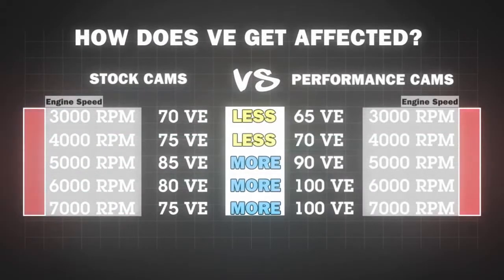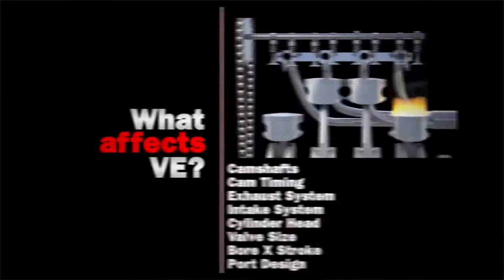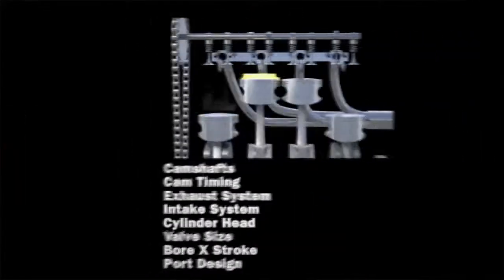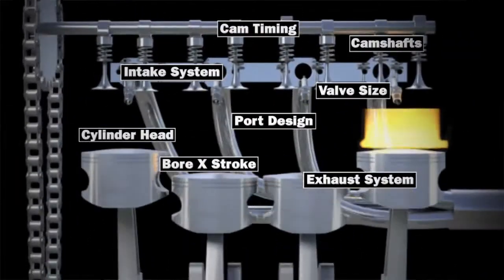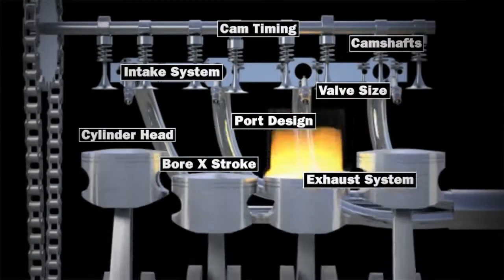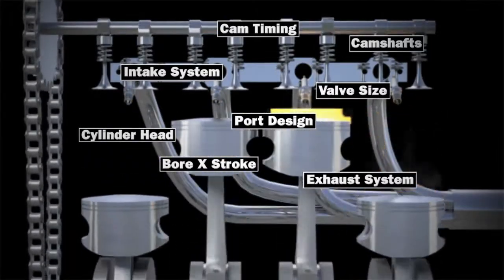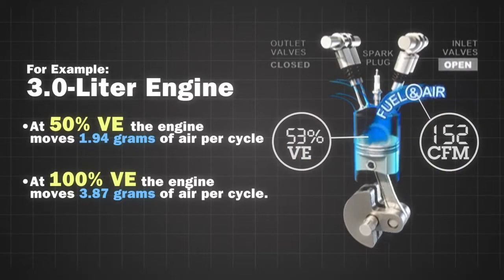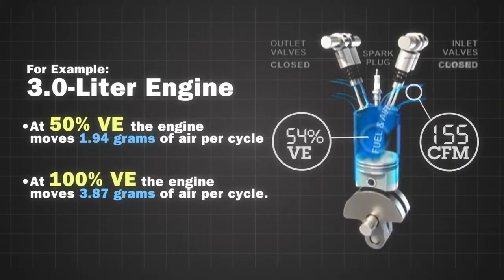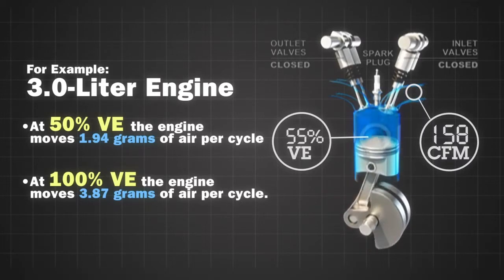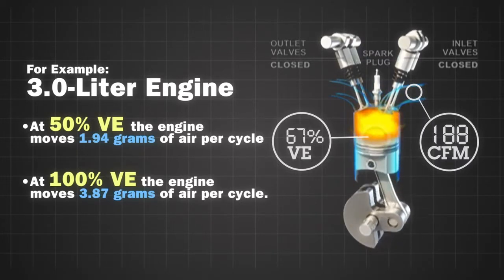It actually may flow less air at other RPMs — it becomes more or less efficient at moving air when you change things like camshaft, intake runners on the intake manifold, exhaust runners in the exhaust, or exhaust pipe diameter. All these things are about moving air through the engine. Volumetric efficiency is just how efficient the engine is at packing those air molecules into that volume.